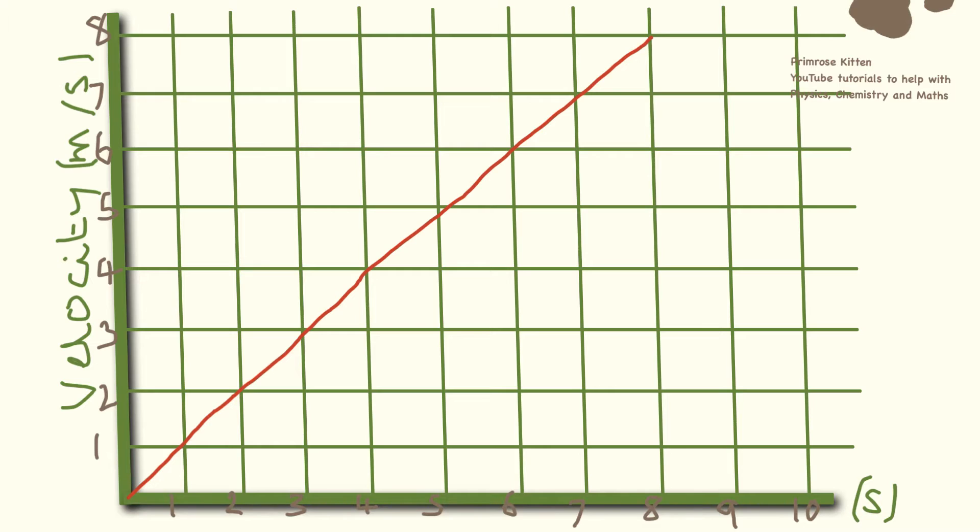Now unlike our distance time graph where we're going at a steady speed, with a velocity time graph our velocity is increasing with each second. So if you see a graph that looks like this on a velocity time graph, it is accelerating.